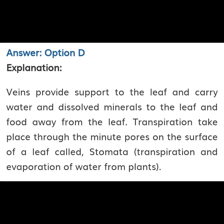Your answer is option D. Explanation: Veins provide support to the leaf and carry water and dissolved minerals to the leaf and food away from the leaf. Transpiration takes place through the minute pores on the surface of a leaf called stomata. Transpiration is the evaporation of water from plants.